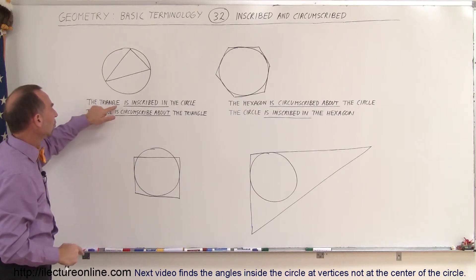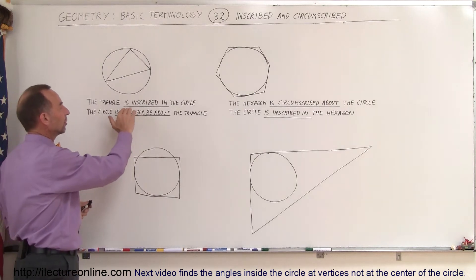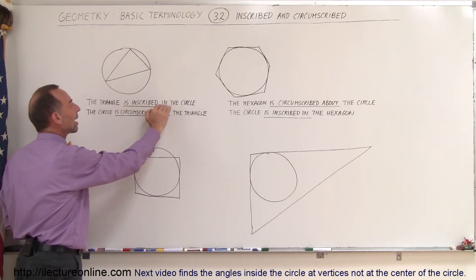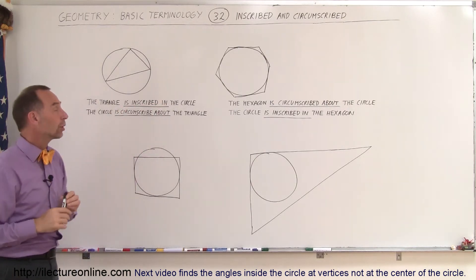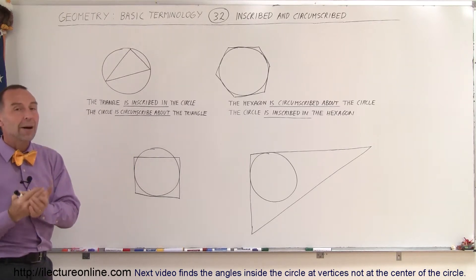So we can say therefore that the triangle is inscribed in the circle. So the correct verbiage is inscribed in the circle. And we can also say that the circle is circumscribed about the triangle.